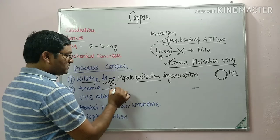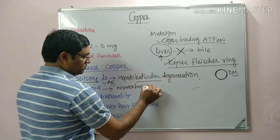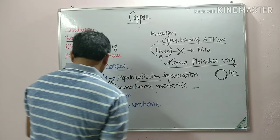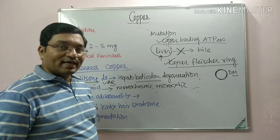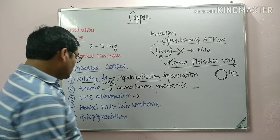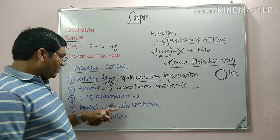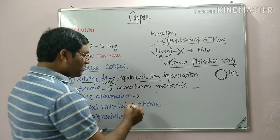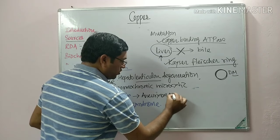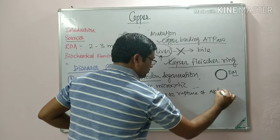Anemia due to copper deficiency is normochromic microcytic anemia. As copper is an important component of lysyl oxidase, which is important in the formation of the vessel wall, a defect in copper leads to a defect in lysyl oxidase, making the vessel wall fragile. This leads to aneurysm or rupture of the aorta — a cardiovascular abnormality.